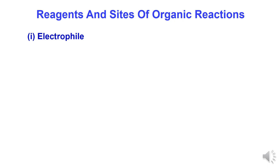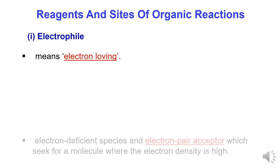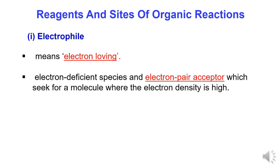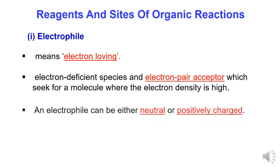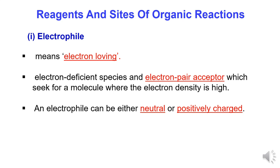Reagents and Sites of Organic Reaction. 1. Electrophile — it means electron-loving. An electrophile is an electron-deficient species and an electron-pair acceptor, which sits where the electron density of a molecule is high. An electrophile can be either a neutral molecule or a positive-charge species.